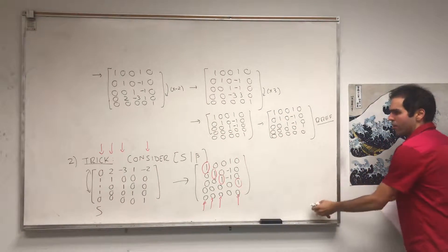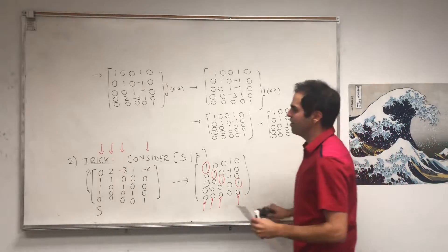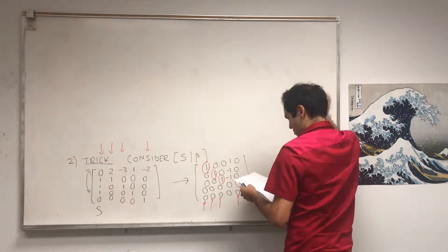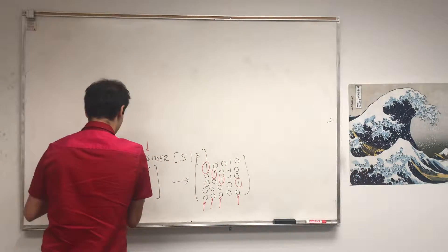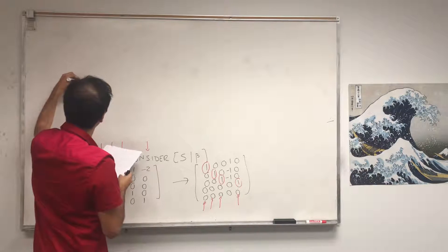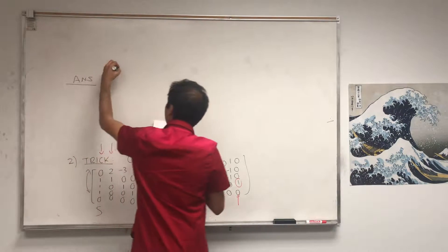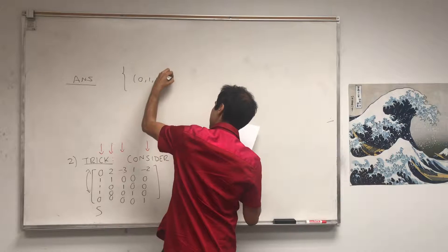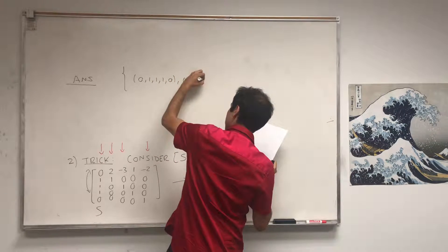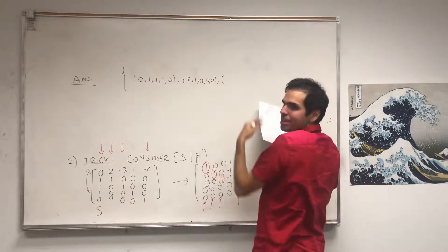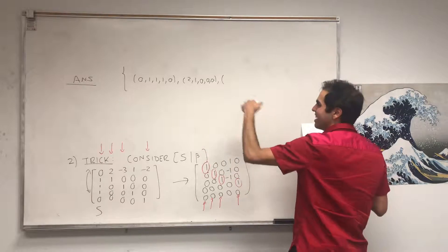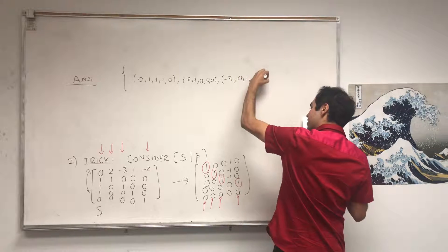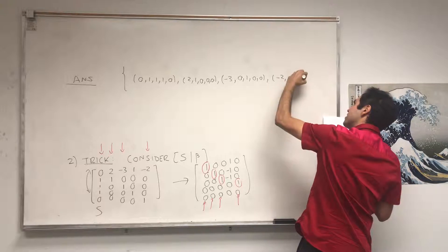So a basis of V that starts with S is: (0, 1, 1, 1, 0), then (2, 1, 0, 0, 0), then (-3, 0, 1, 0, 0), and then (-2, 0, 0, 0, 1). Notice it indeed starts with S.